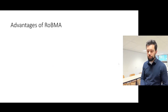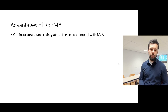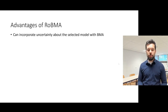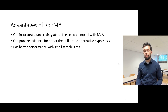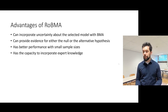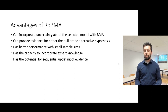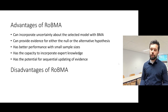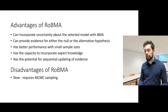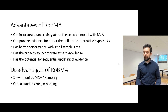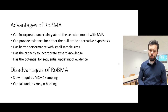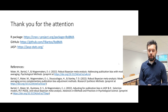Before I end the talk, here is a quick summary of the ROBMA methodology. The main advantages are that ROBMA can incorporate model uncertainty via Bayesian model averaging, can provide evidence for both null and alternative hypotheses, has better performance especially with small sample sizes, has the capacity to incorporate expert knowledge, and has the potential for sequential updating of evidence. There are, however, also some disadvantages: it is relatively slow compared to frequentist counterparts because it requires MCMC sampling, and it can fail under strong prior-data conflict. If you want to learn more, I recommend our papers and tutorials on the methodology. Thank you very much for tuning in, and have a nice rest of the conference.